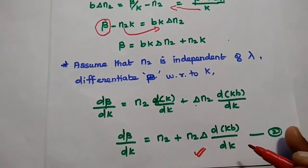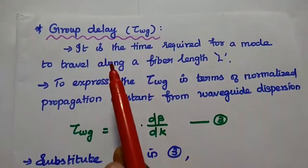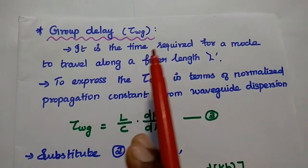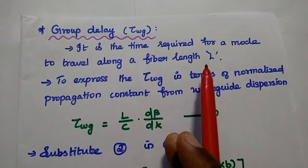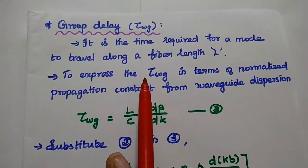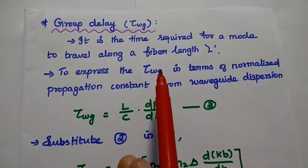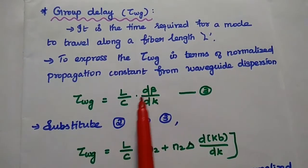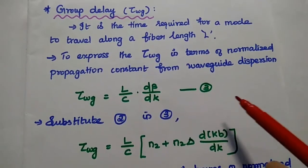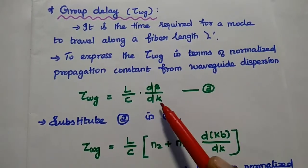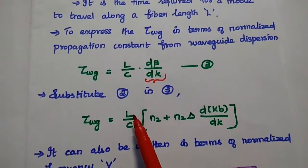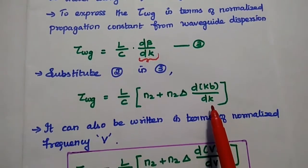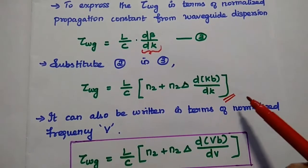Next, we obtain the group delay due to waveguide dispersion, denoted τ_wg. Group delay is the time required for a mode to travel along a fiber length L — that is, how long a mode takes to travel length L in a fiber cable. We express this group delay in terms of the normalized propagation constant: τ_wg = (L/c)·(dβ/dk), which is the third equation. Substituting the second equation: τ_wg = (L/c)·[n2 + n2·Δ·d(kb)/dk].